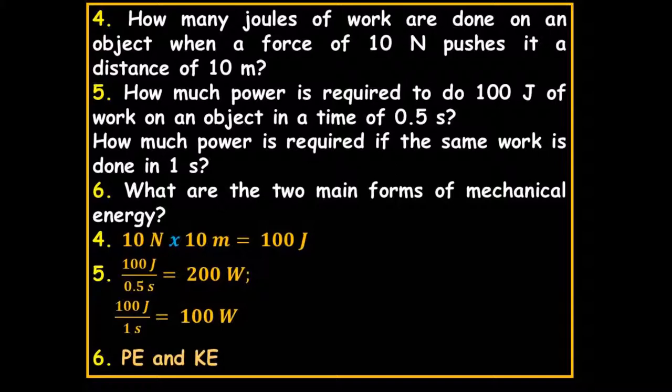How much power is required to do 100 joules of work in a time of 0.5 seconds? That's work divided by time: 100 divided by 0.5 equals 200 watts. And how much power is required if the same amount of work is done in one second? It would be less — 100 watts.